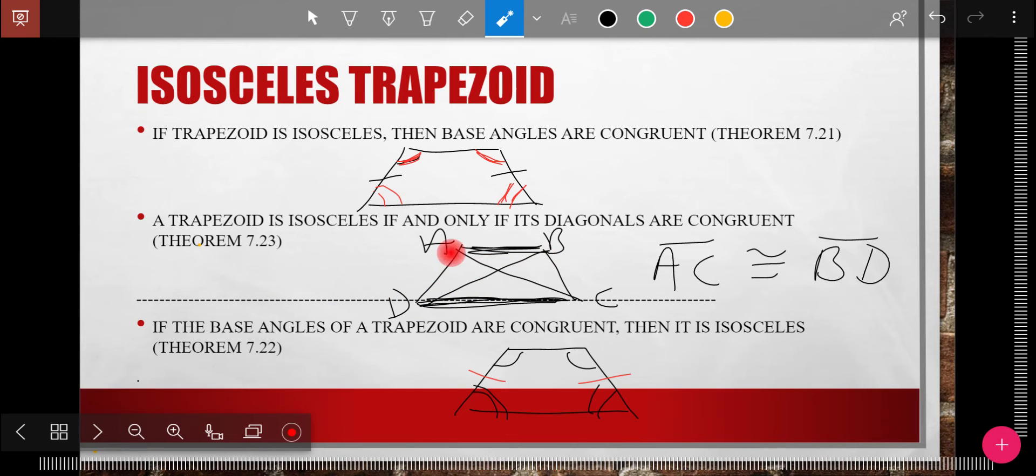And then we have diagonals of an isosceles trapezoid are congruent. And the base angles rule, just like in triangles, works both ways. So if you didn't know whether it was isosceles, but you saw base angles were congruent, then you would know it was isosceles.